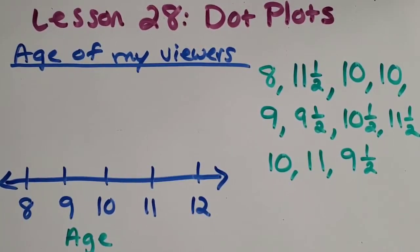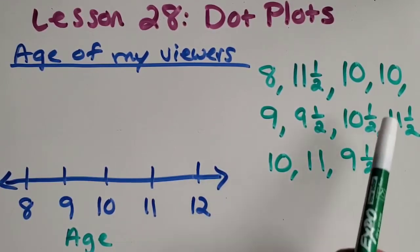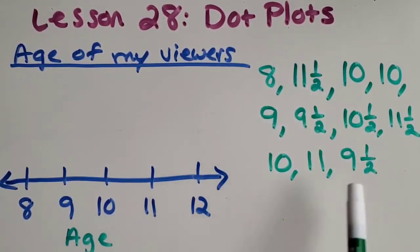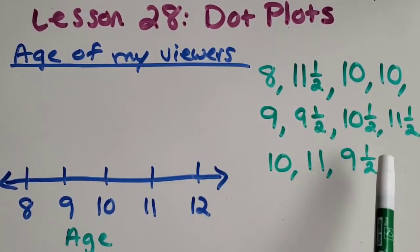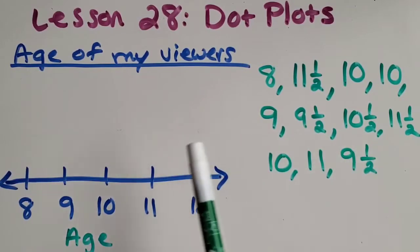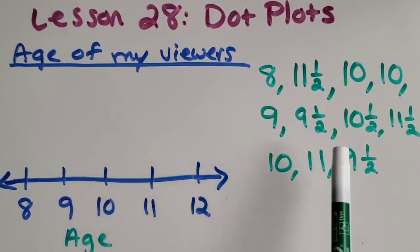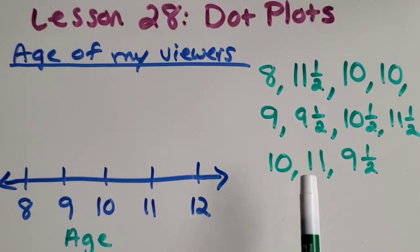Here's an example of a dot plot that is all set up. It's got a good number line. It's got labels, a title. It's got a scale, it's counting by ones, it starts at eight and goes up to 12. And this one has some random data that I've collected on the ages of some of my viewers. And I want to see if we can create the dot plot by looking at the data. So I want you to kind of get a chance to be a part of the setting up of the graph.